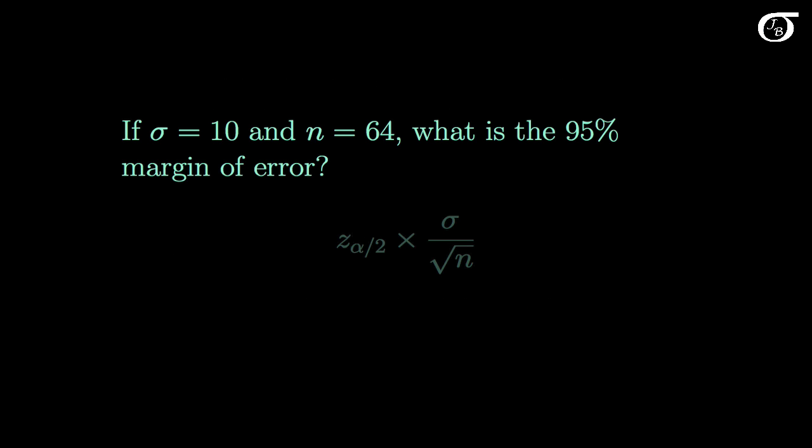Let's do one quick margin of error calculation. If sigma is 10 and n is 64, what is the 95% margin of error? Well here's our margin of error formula. If you recall, the appropriate z value for a 95% margin of error is 1.96. And so our margin of error is going to be 1.96 times 10 over the square root of 64, and this works out to 2.45.